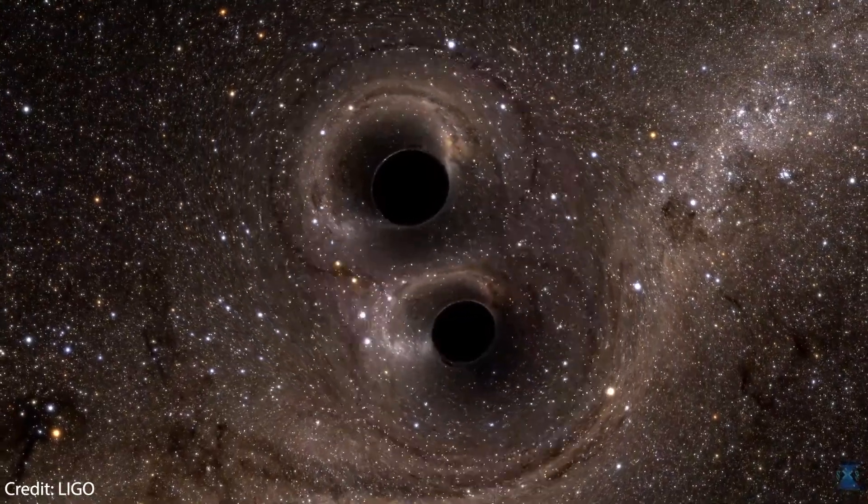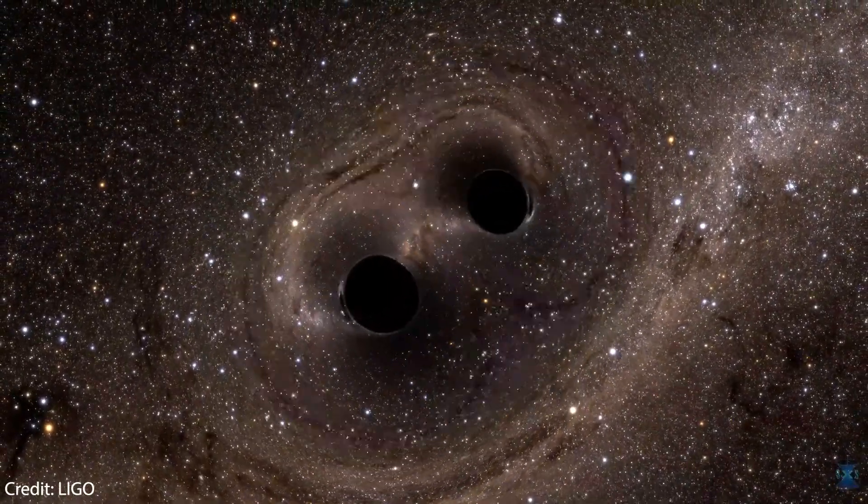Space-time is constantly being perturbed by gravitational waves propagating through the cosmos. But while we know we're constantly being bombarded by these waves, they're incredibly difficult to detect. This is because the wavelengths are so massive and the perturbations are so small. So scientists need to think of ingenious ways to detect these tiny signals.